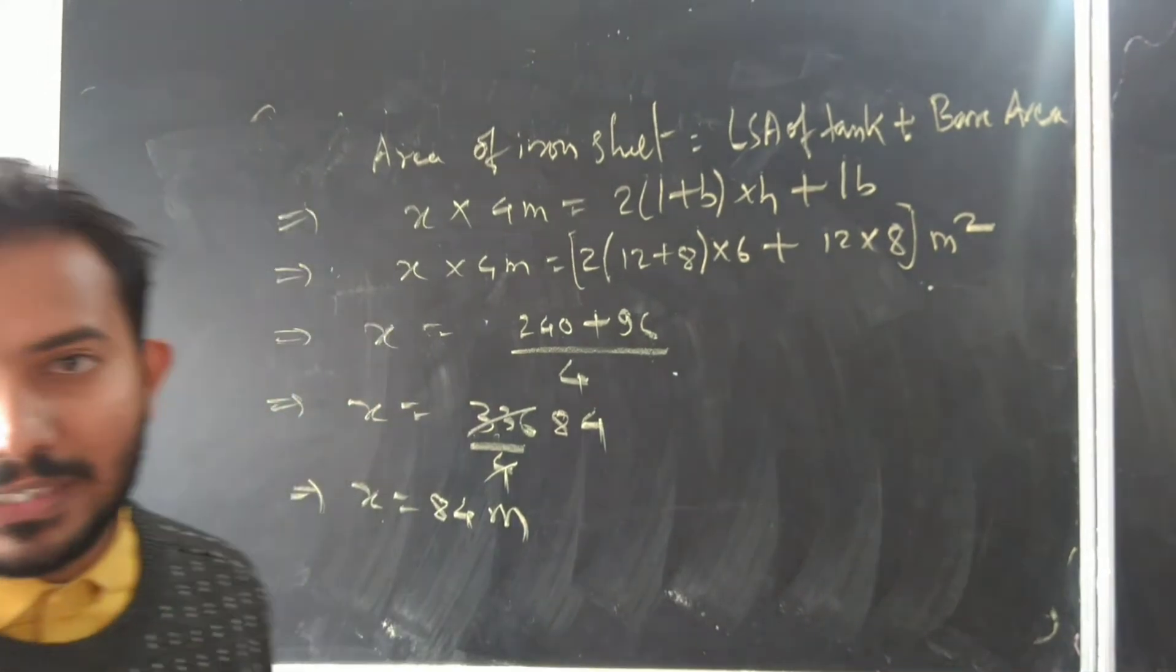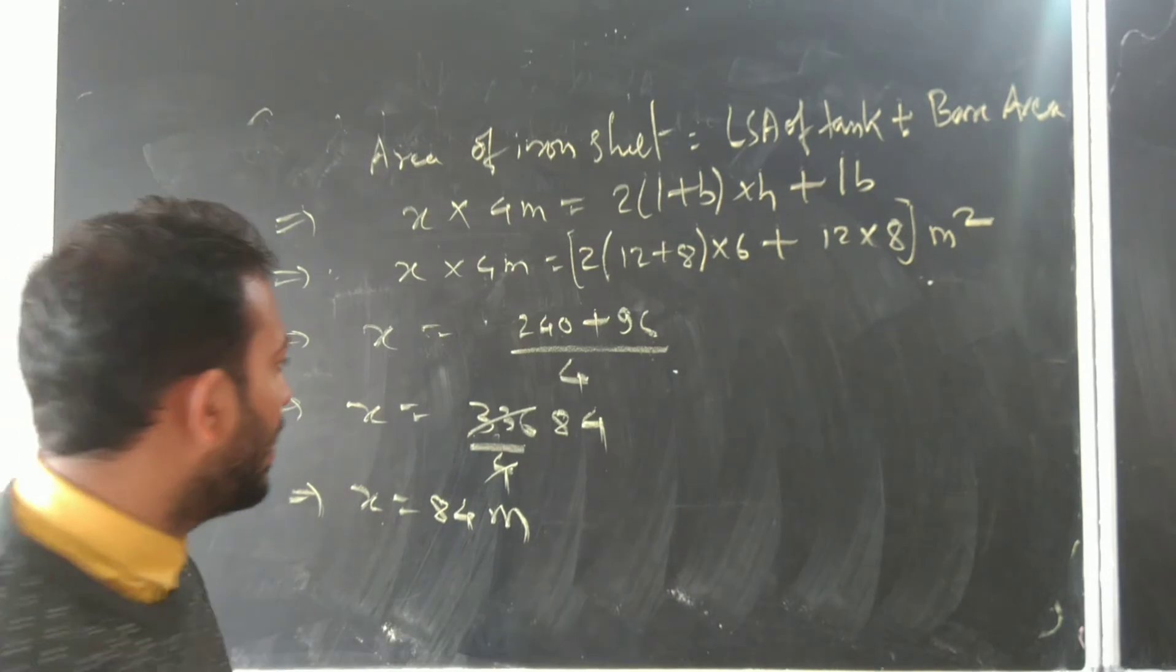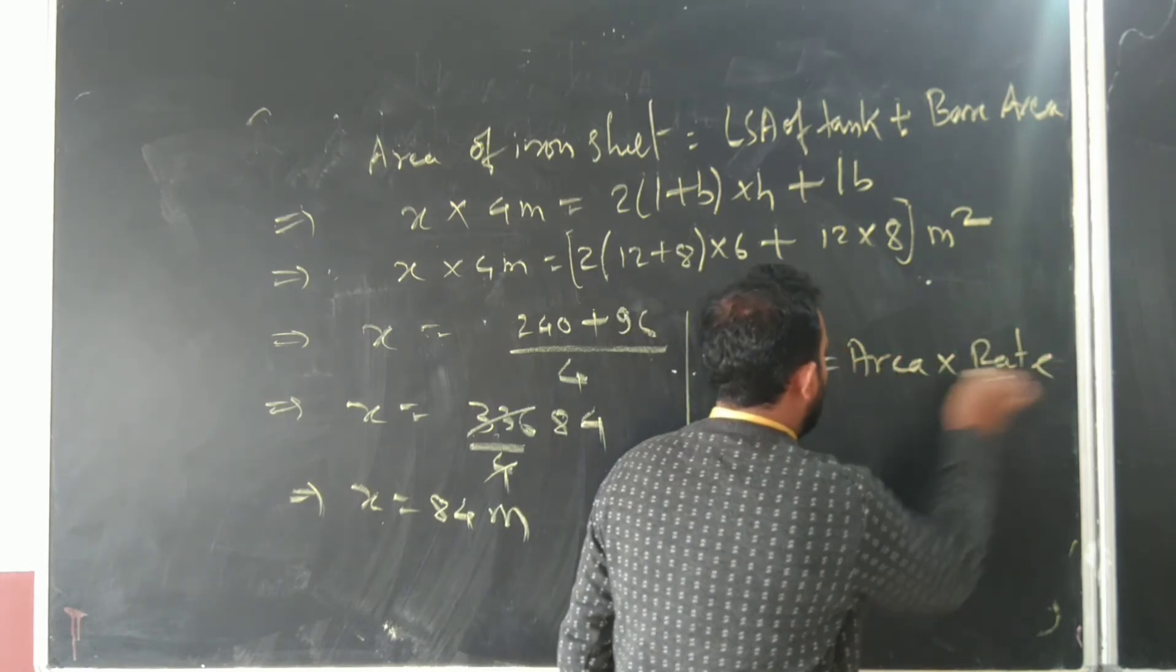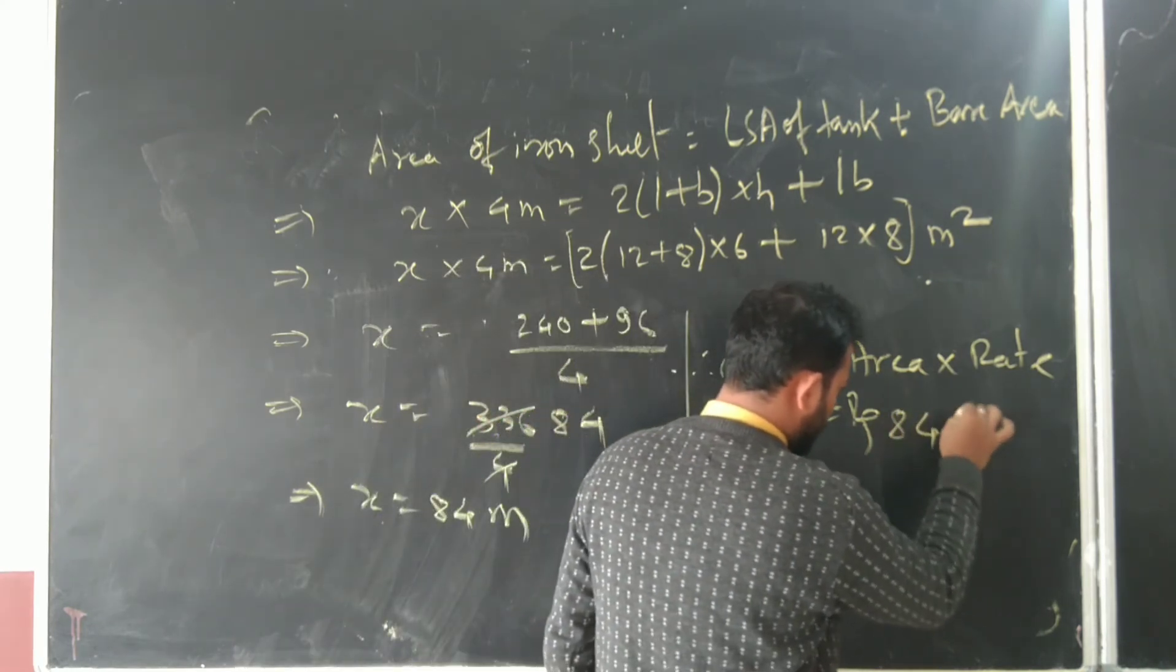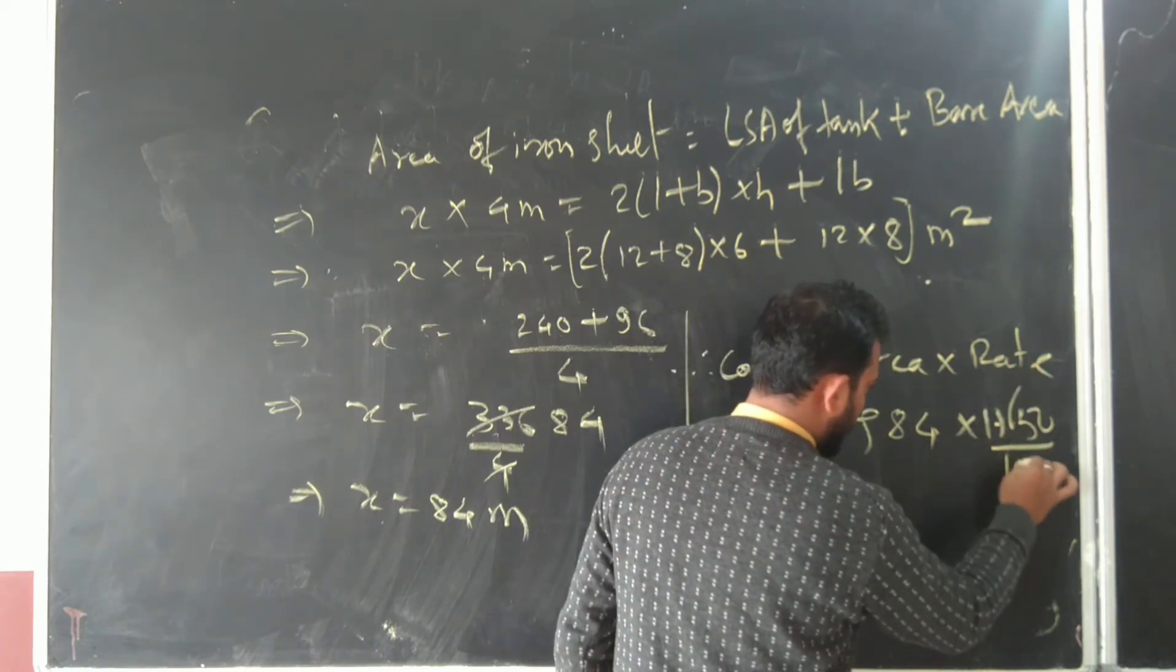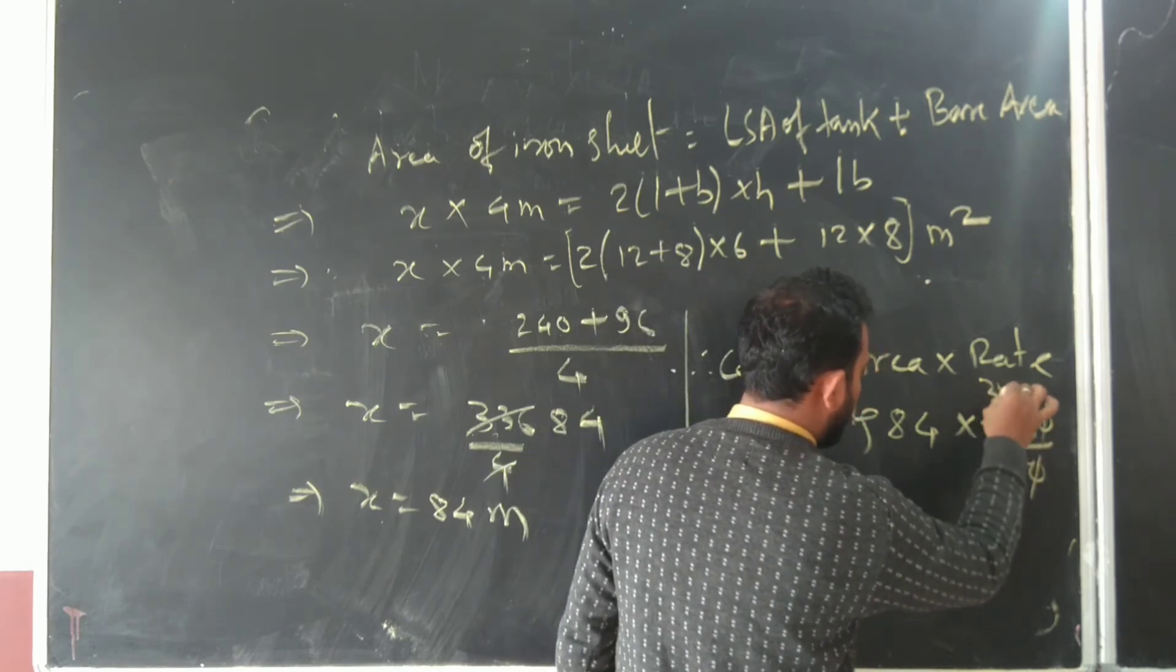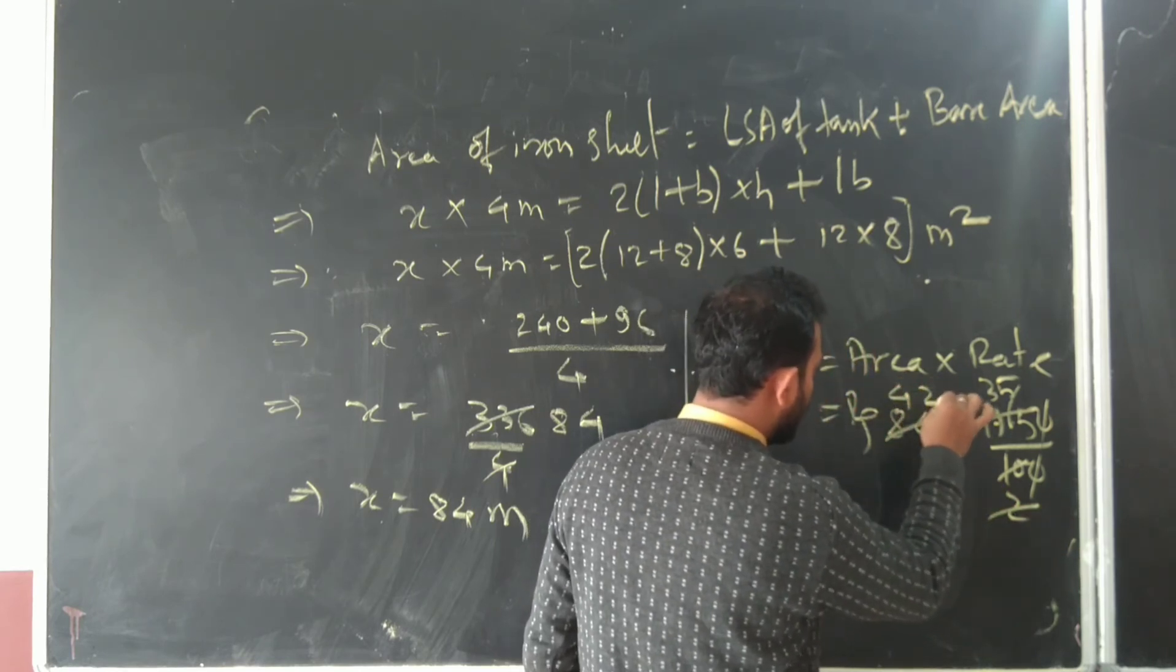X equals 84 meters. That means length of iron sheet is 84 meters. Required cost: rate is 17.50 per meter, and length is 84 meters.